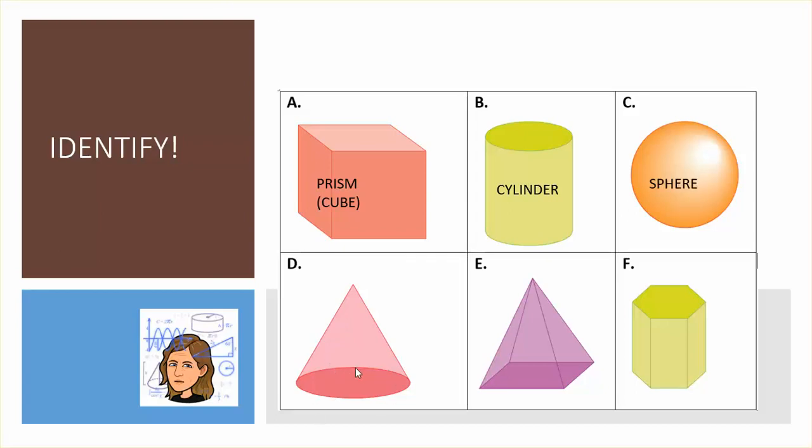In D, I see a base that is a circle. There is only one of them and then I see that the curved sides meet at a point. That's a cone.